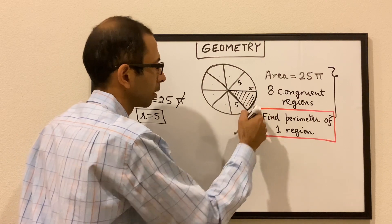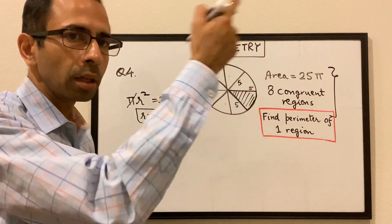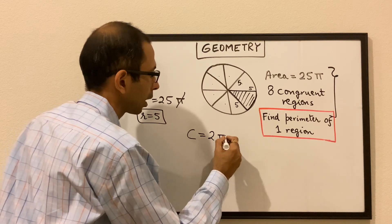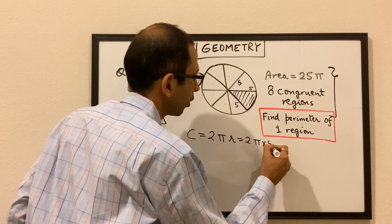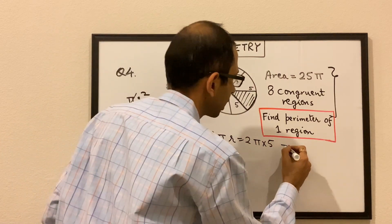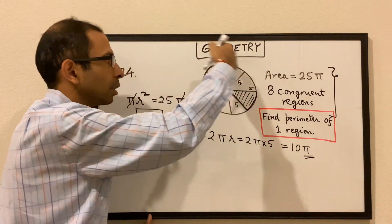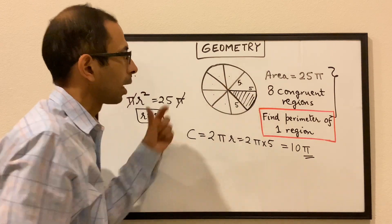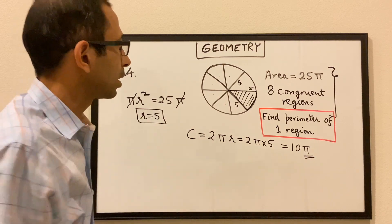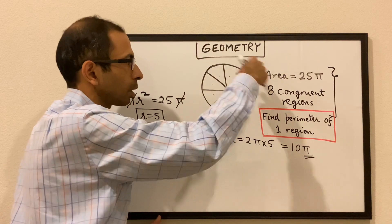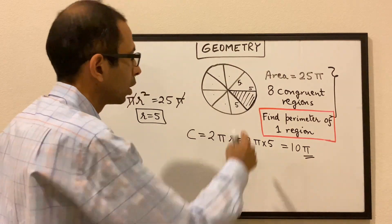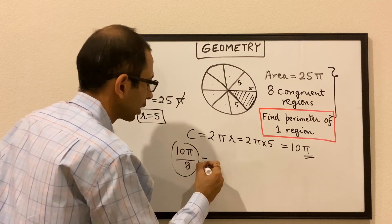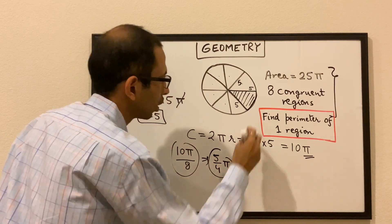All we need to do is find the arc length. When the radius is 5, the overall circumference is 2πr, which is 2 times π times 5, so basically 10π. That's the full circumference of the circle. We are talking about 1/8 portion of the circumference. Since each of these regions are congruent, this arc length would be 1/8 of the total circumference, which is 10π divided by 8, or 5π over 4.